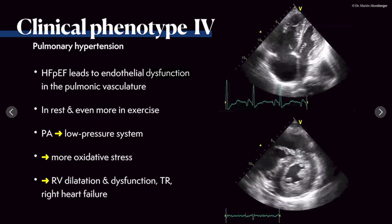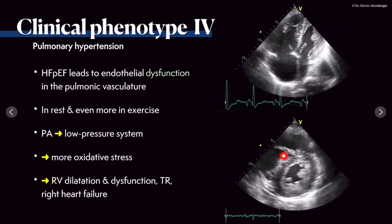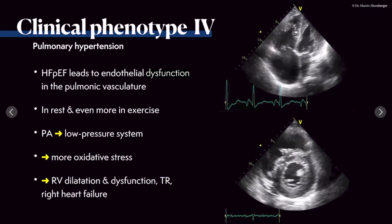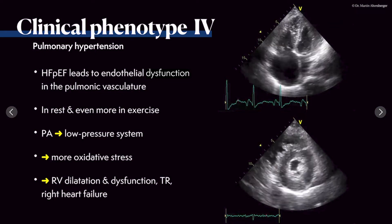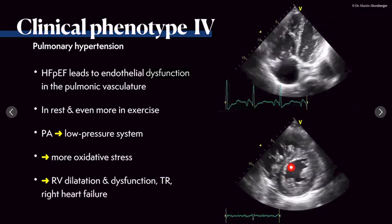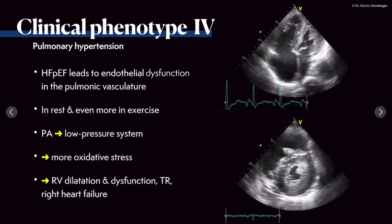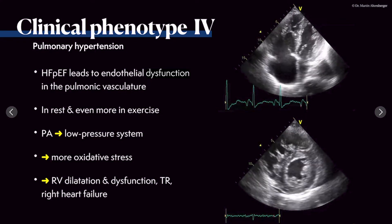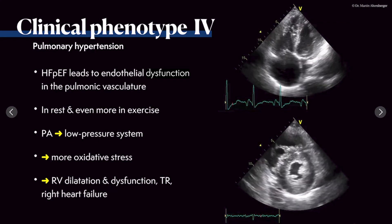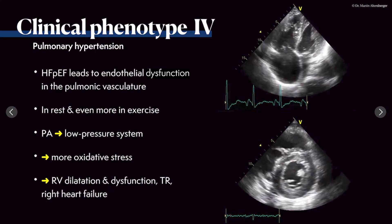In the short axis view, we also see this prominent right ventricle, the prominent trabecular system, the prominent moderator band, the small but thick left ventricle — so the small cavity with thick left ventricular walls — and the D-shape of the left ventricle, indicating elevated pulmonary pressures.